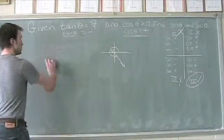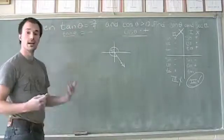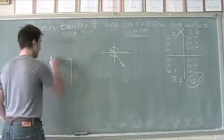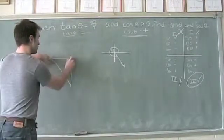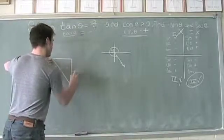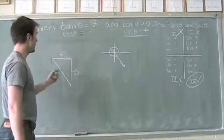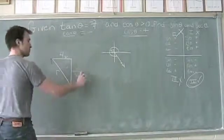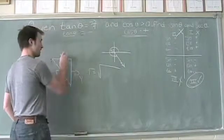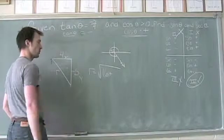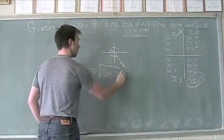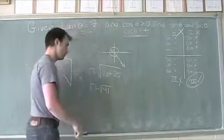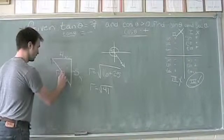Let's use right triangle trig to find our other values. Tangent of theta is always a comparison of y to x. We're in quadrant 4, so if we form a right triangle, our y value is negative 5 and our x value is positive 4. What we need now is r. R equals the square root of x squared plus y squared — that's the square root of 16 plus 25, which equals the square root of 41.